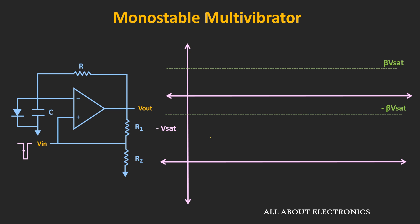Initially, let's assume that the output of the circuit is equal to the positive saturation voltage — that is the stable state of the circuit. Whenever the output is at positive saturation voltage, the voltage at the non-inverting node will be equal to R2 divided by (R1 + R2) times Vsat, or β times Vsat, where β = R2 / (R1 + R2). When the output is at positive saturation voltage, the diode becomes forward biased, and the voltage across the capacitor equals the forward voltage drop across the diode. So at the inverting node, the voltage equals that forward drop. Since β·Vsat is more than the voltage at the inverting node, the output remains at positive saturation voltage.